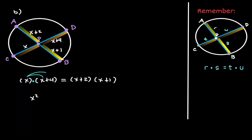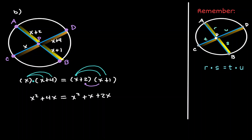The x is also going to get distributed, giving us 4x. On the right-hand side, we need to distribute as well. In our first distribution we get x squared, and in our second distribution we get x. Now, distributing the value of 2 gives us 2x, and distributing again gives us 2.